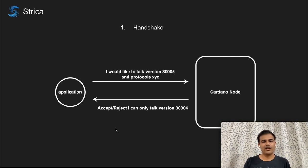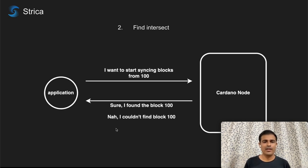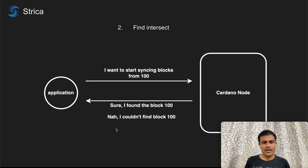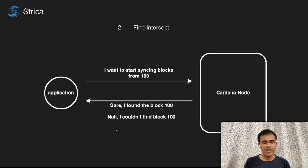Once the connection is established, you can start using the chainsync protocol. The second step is find intersect. In find intersect, we initiate syncing of blocks from the Cardano node by telling it that we want to start syncing from block 100 — maybe we have blocks up to 99, so we want to get 101, 102, 103, and so on. The Cardano node can respond saying it has block 100 and syncing can begin, or it can say it does not have block 100 and ask you to try a different block height. Once the node accepts the pointer, it keeps track of up to which block number you are syncing.